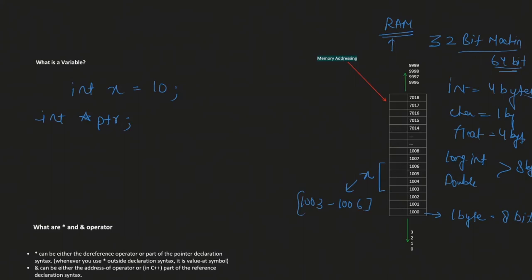Now when I declare a pointer I need to attach it to some memory address, otherwise it holds a garbage value. So I do ptr = &x. The & operator gives me the address of x, which is 1003. So ptr will be holding or storing the value 1003 in itself. This variable ptr, taking up four bytes of memory, will now have the value 1003 stored in it.